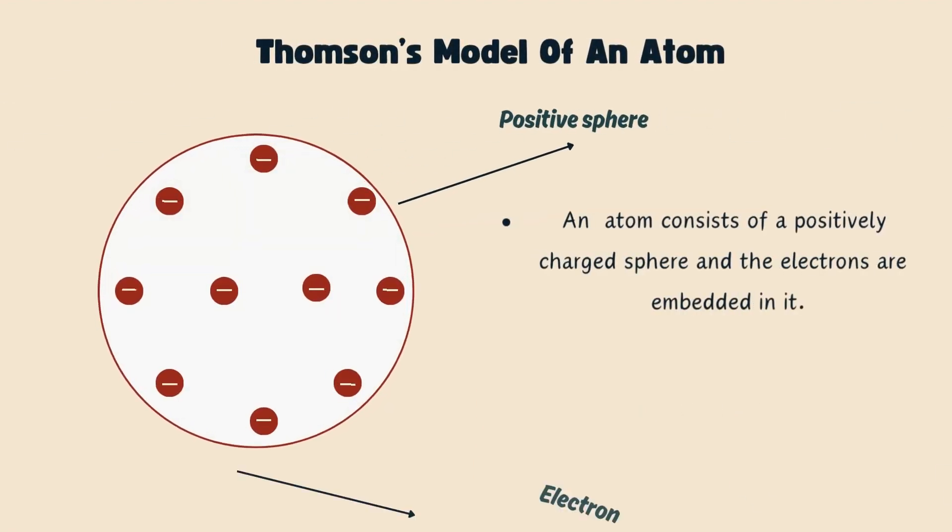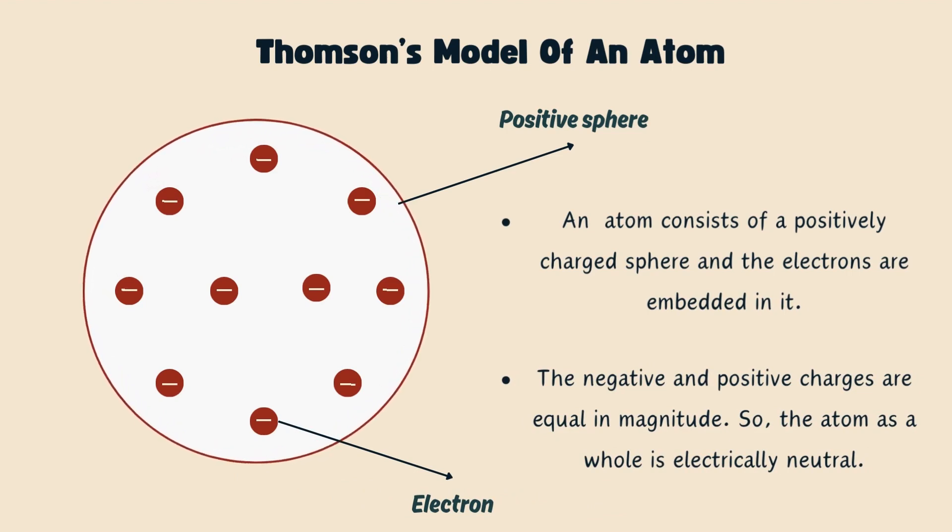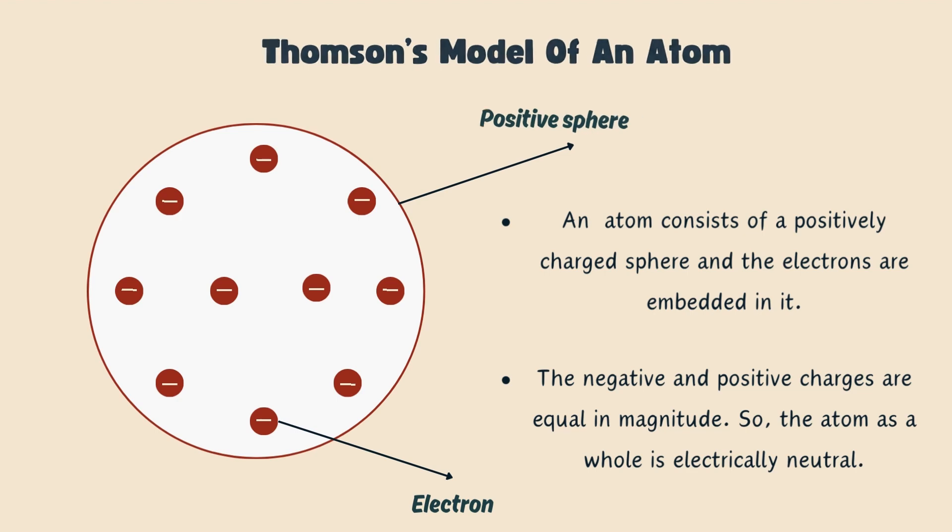The discovery of these charged particles led to the proposal of various atomic models. First one was the model by J.J. Thomson. This model was similar to that of a Christmas pudding, with electrons like dry fruits in a positive sphere. This model proposed that an atom consists of a positively charged sphere and the electrons are embedded in it. The negative and positive charges are equal in magnitude, so the atom as a whole is electrically neutral. But this model had some drawbacks as it was not able to explain all aspects of different experiments on atom.